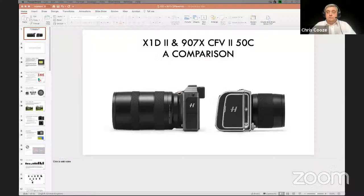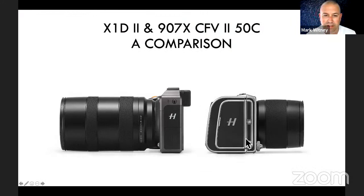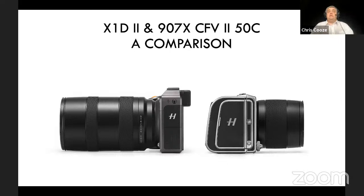So fundamentally the same cameras — the X1D and the 907X share the same sensor. We'll go through all the different elements they share and generally the specification of each camera. Basically we look at five or six features and benefits that they share from the platform, and then move on to look at the subtle differences in terms of handling, functions, and features. Depending on what type of shooting you do, each of those differences will probably guide you to which camera is best for you.